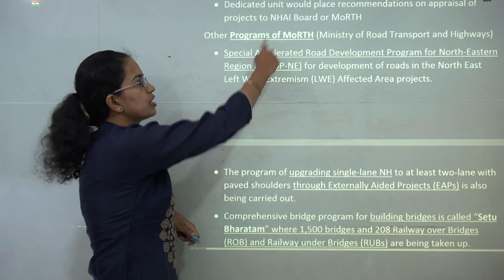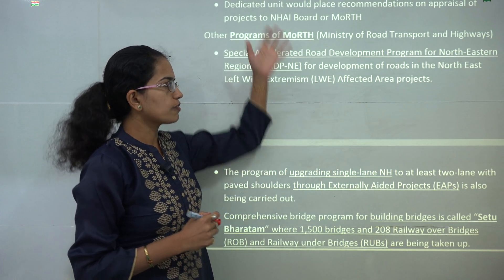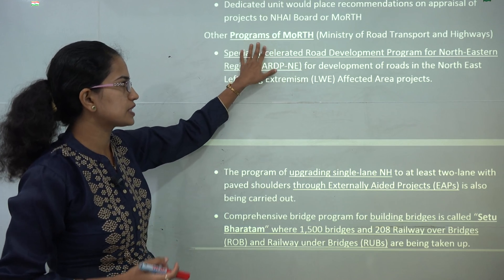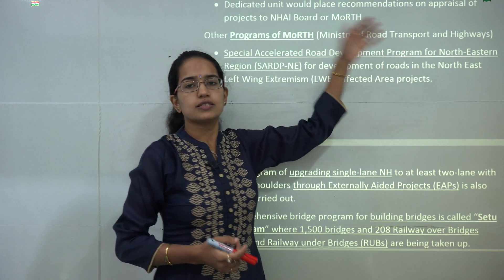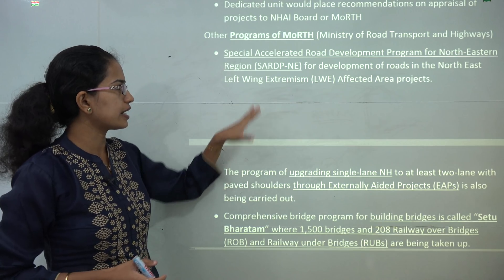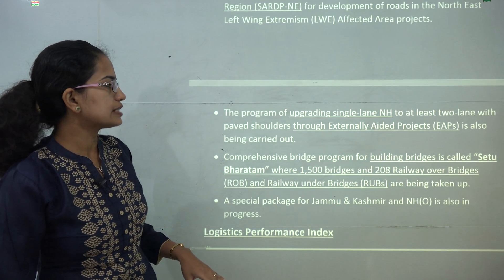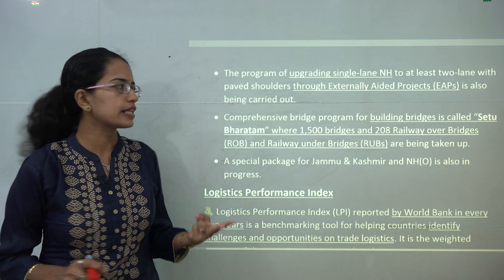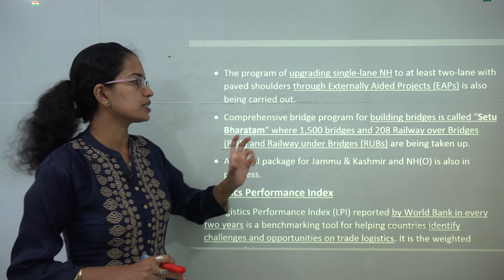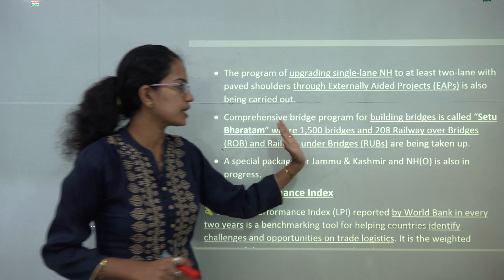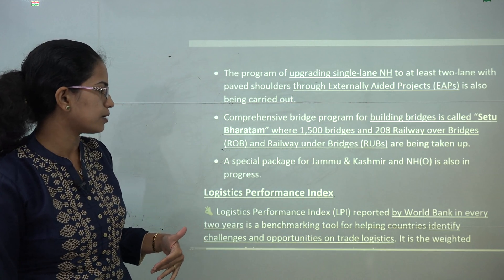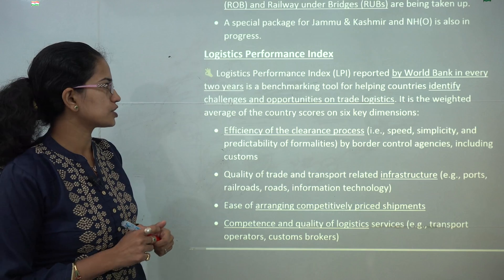The Ministry of Road Transport and Highways has also laid down other important projects: the development of the Northeast through the Special Accelerated Road Development Program for the Northeast, integrating it with the rest of the country; upgrading single-lane roads to at least two-lane through externally aided projects; building bridges under the Setu Bharatam project — nearly 1,500 bridges and 208 railway overbridges or underbridges; and a special package for Jammu and Kashmir.